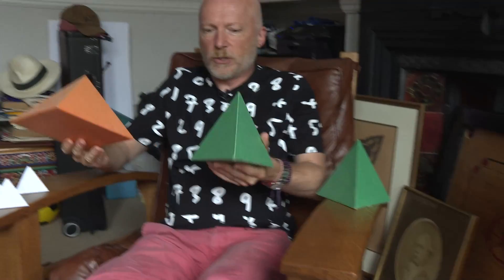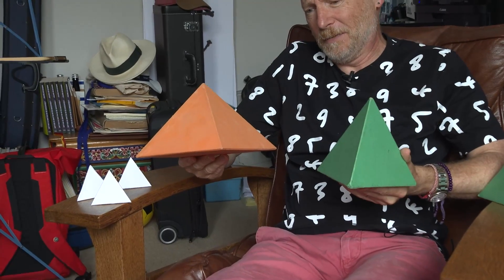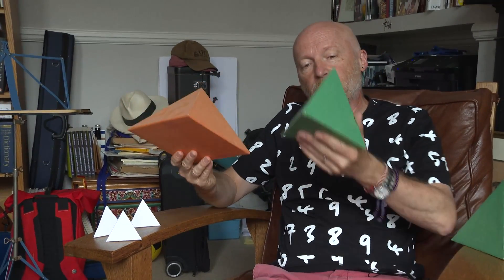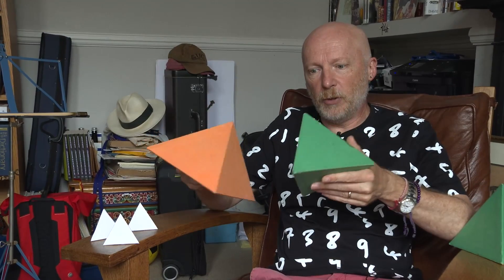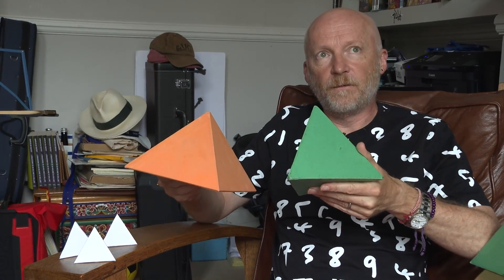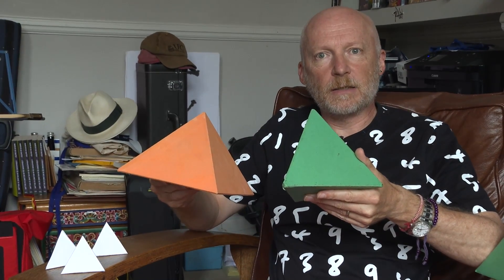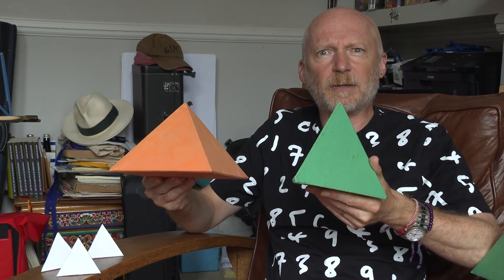So at first sight, you may say, this is pretty obvious. This shape has five faces. This one has four faces. When I put these together, I lose two faces. So five plus four is nine. So I should get seven faces. What's the big problem?